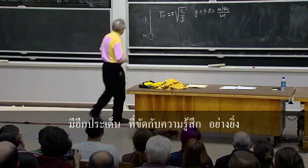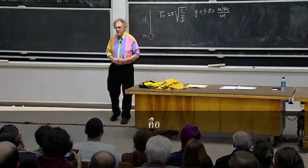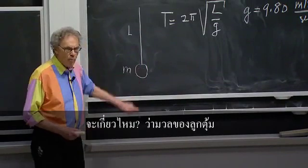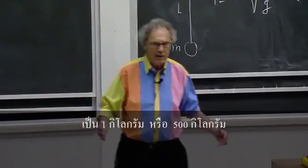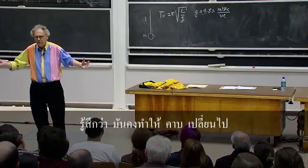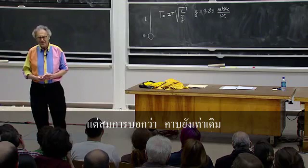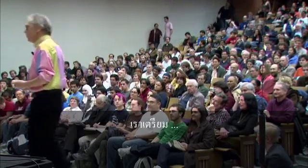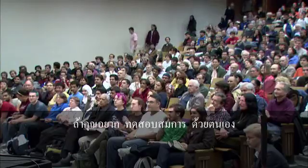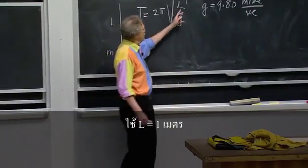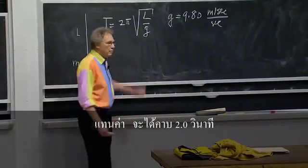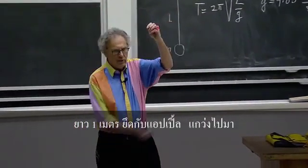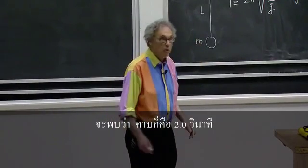There is something else in here which is even more non-intuitive. Doesn't it matter whether the bob — we call this the bob — whether it is one kilogram or 500 kilograms? You would think that must make a difference in the period. But the equation says, sorry, it doesn't. And I'm going to demonstrate that to you too. If you ever want to test this pendulum equation for yourself, put in L equals one meter. You will get a period of 2.0 seconds. It's very easy to do at home — you make a one-meter string, put an apple at the bottom, and you swing it. The one meter has to be accurate. You'll see that it's going to be 2.0 seconds.